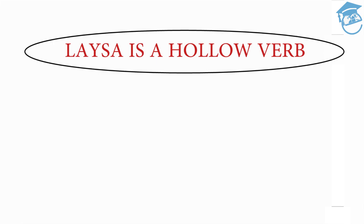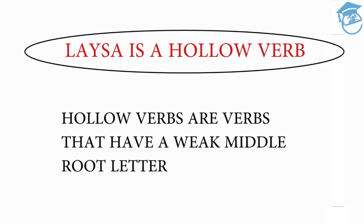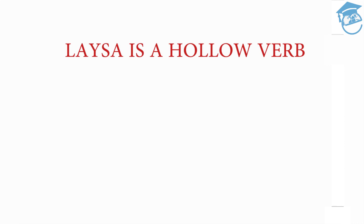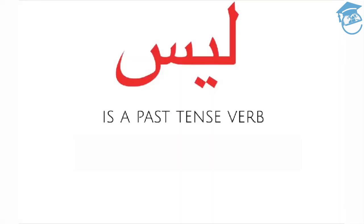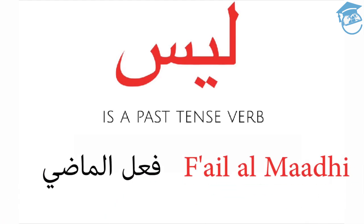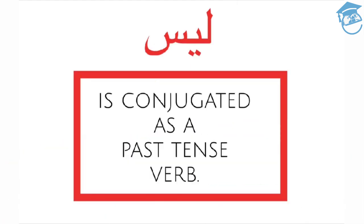Leysa is a hollow verb — el fa'al el-adjuwaf. Hollow verbs are verbs that have a weak middle root letter. In this case, leysa has a ya as its middle root letter. Leysa is a past tense verb — fa'al el-mahdi — and it is conjugated as a past tense verb.